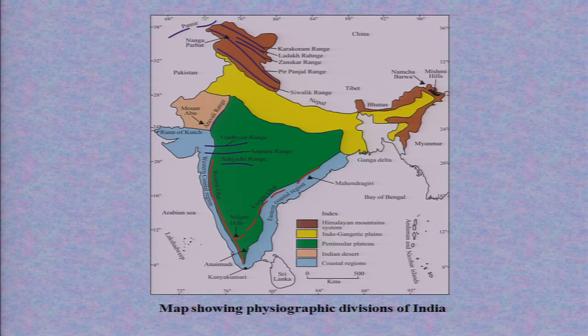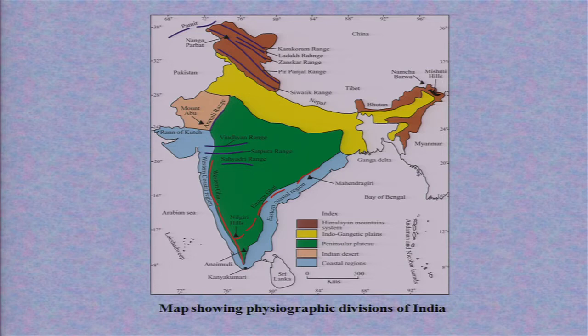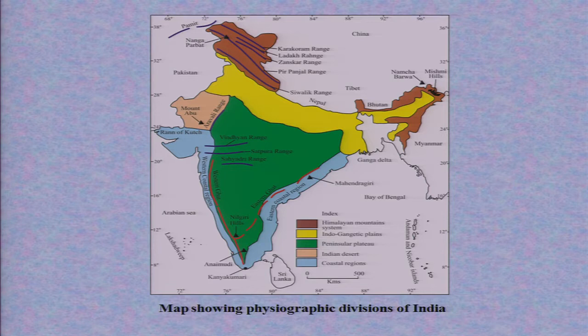The yellow color indicates Indo-Gangetic alluvium, and in the extreme east you have another yellow area — that is the Brahmaputra system. On top you see the Himalaya, with a number of black lines indicating different ranges, such as the Karakoram range, Zanskar range, Dhauladhar range, and so forth. In the east, the yellow color is surrounded in a U-bend, which is called the Syntaxial bend.